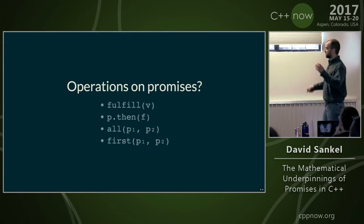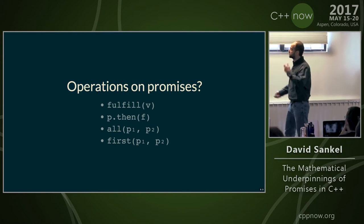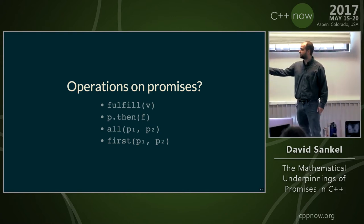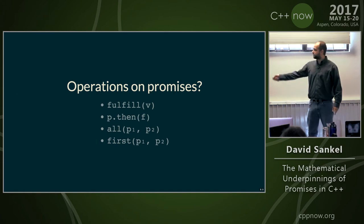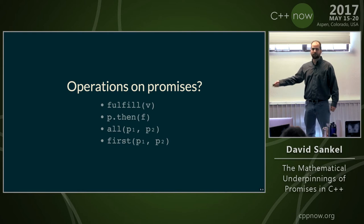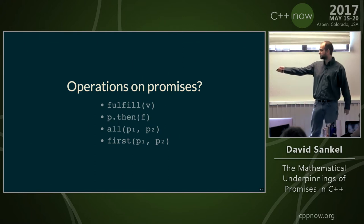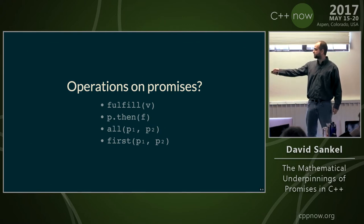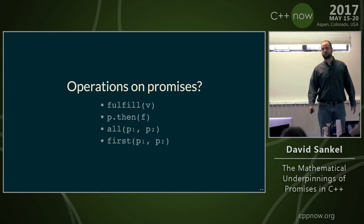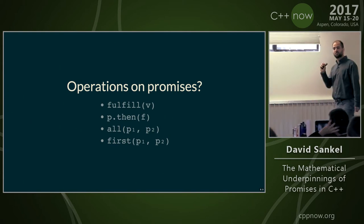What are some operations on promises? There's some way to create a fulfilled promise; a 'then' function; 'all', which returns a promise fulfilled when both p1 and p2 are fulfilled, containing both values; and 'first', which returns whichever of the two promises gets fulfilled first. These are the basic operations.